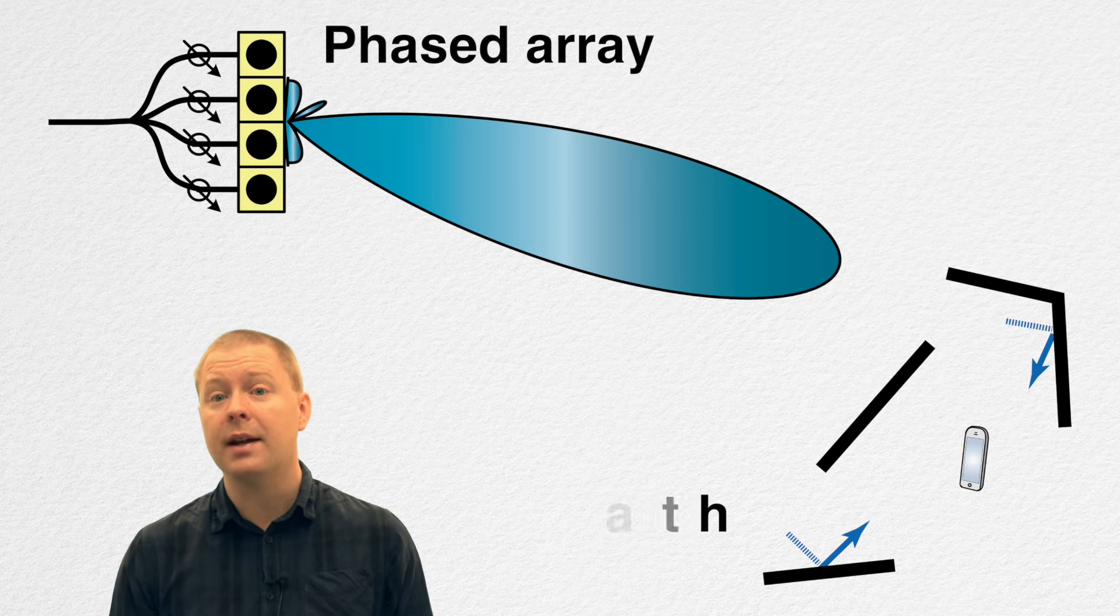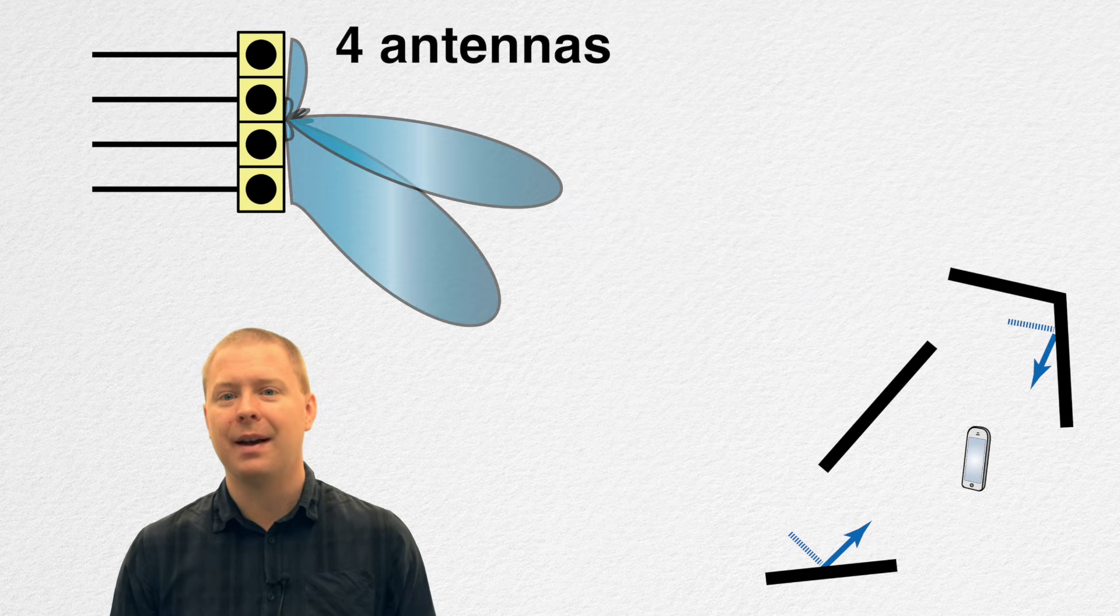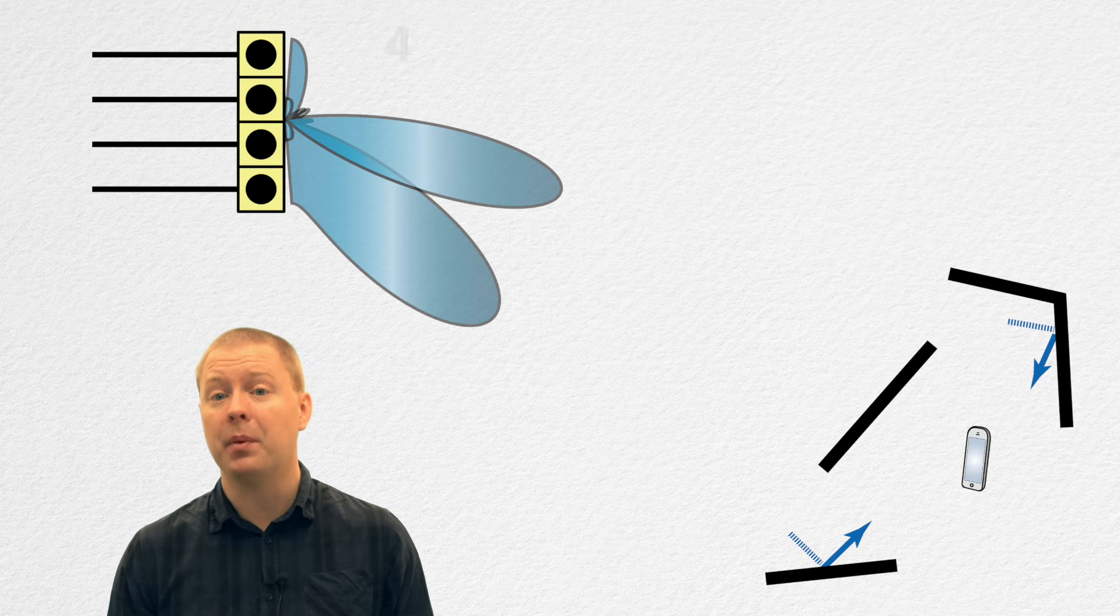If you have all the flexibility of beamforming by having four antennas in this case, one input to each of the radiating elements, you can send a beam that points into both of these directions. In that way, you will be able to get twice the energy being reached at this user because you're using multiple paths.